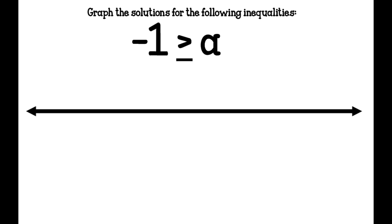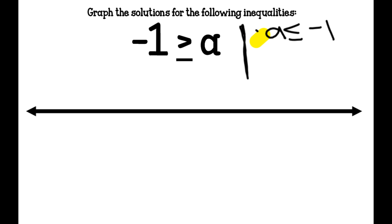I have negative 1 is greater than or equal to A. We always want our variable on the left side, so we use the flip it, switch it, rearrange it rule. Flip it, switch it, rearrange it — that reminds us to put the variable in front and switch the symbol so it's in the order easiest to graph. So we get A is less than or equal to negative 1.